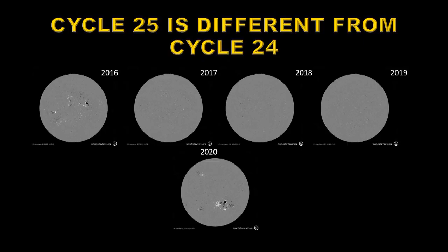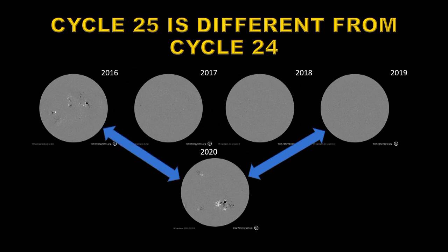When we go from one cycle to another cycle we expect certain differences. Let's take a look at the Sun over the last five years and compare what's been going on. These all were taken on the 1st of December of each of the years from 2016 to 2020. When you compare what the Sun was like for the last three years with what's going on now, you can see there's been a major increase in activity levels. But when you compare it with the way it was in 2016 during the decay of Solar Cycle 24, you see there are also major differences.